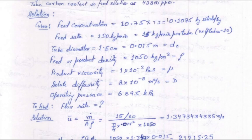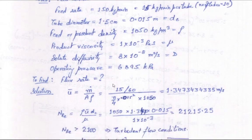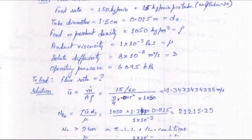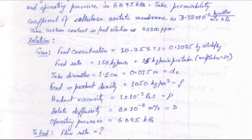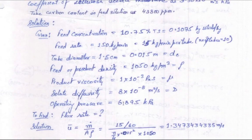Collecting the data: feed concentration in kg solids/kg solution, feed rate converted to 15 kg/min per tube, tube diameter, feed/product density, viscosity μ, solute diffusivity D, and operating pressure. To calculate the Reynolds number, the flow velocity is needed, but only mass flow rate is given. Velocity is obtained from: v = mass flow rate / (cross-sectional area × density). The cross-sectional area for flow is π/4 · d², the circular tube cross-section parallel to the membrane.